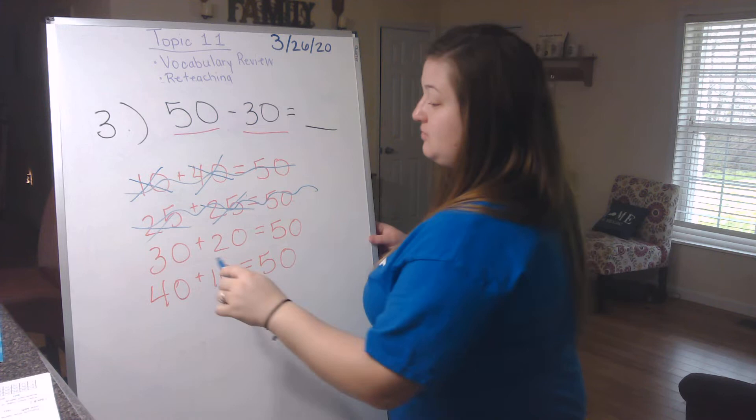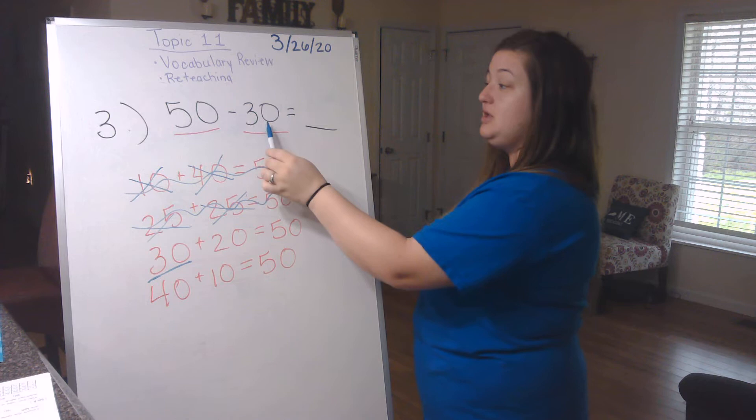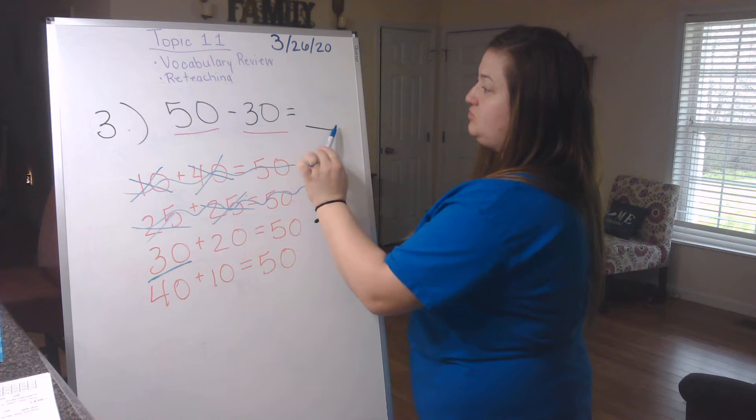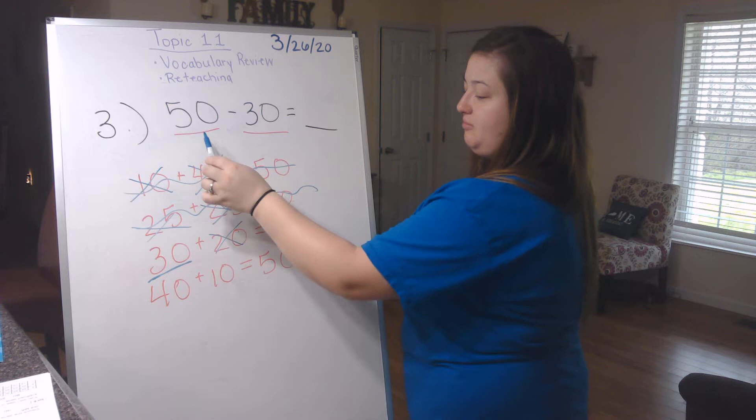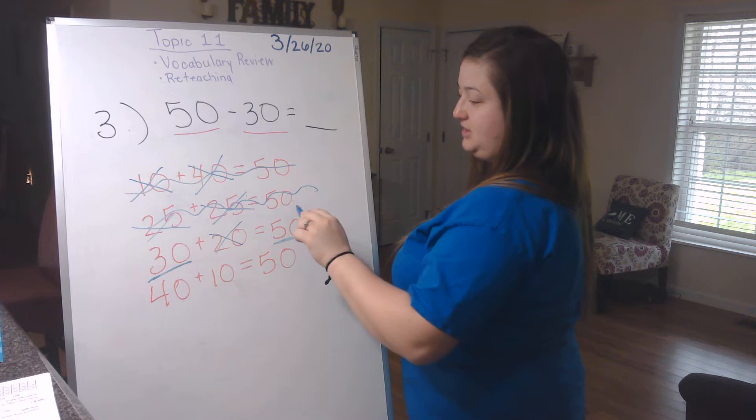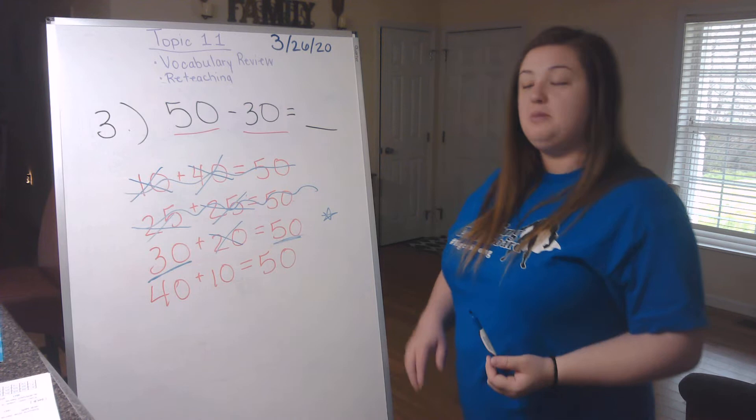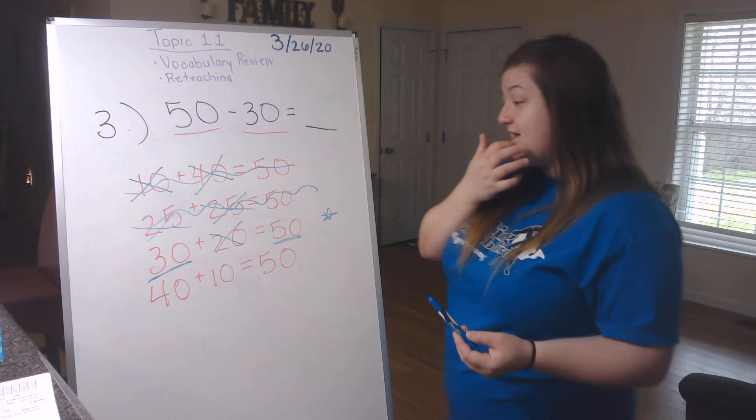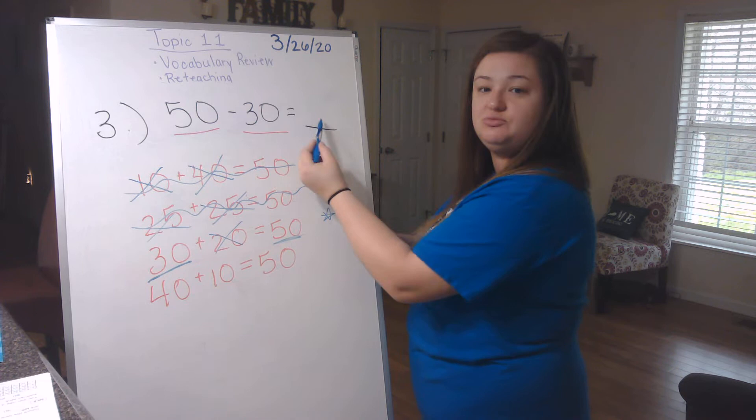Now let's look at this problem, the second one. Does this problem up here, our subtraction problem, does it have 25 in it? Nope. Does it have 25? And it does have the 50, but we said since it didn't have either of those addends in it, it can't be that one. Okay, now let's look at this one. 30. There's a 30 down here. Is there a 30 up here in my subtraction problem? Yes. What about 20? Well, there's not a 20 up here. What about a 50? There's a 50 here and a 50 here. Yes, it does have a 50. So that one is possible because it's got two of the numbers.